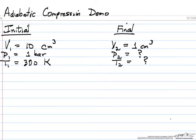This is an example of calculating the final temperature and pressure that we might be able to obtain in an adiabatic compression. We'll start around room temperature, 1 bar pressure, and let's assume we have 10 cubic centimeters that we're going to compress to 1 cubic centimeter. We're going to do this fast, so we're going to assume it's adiabatic.